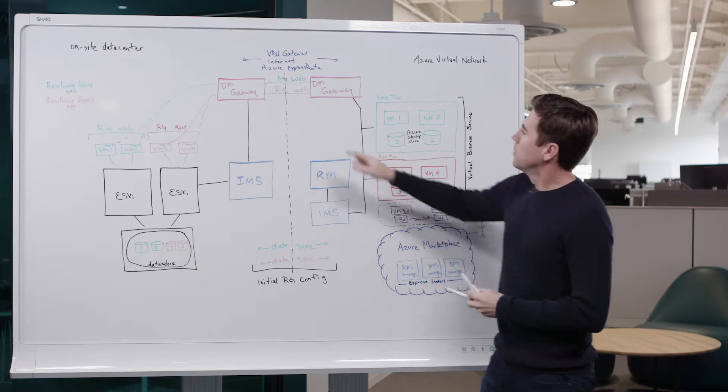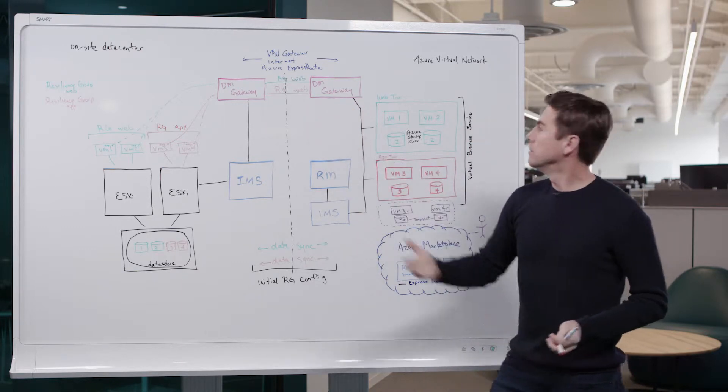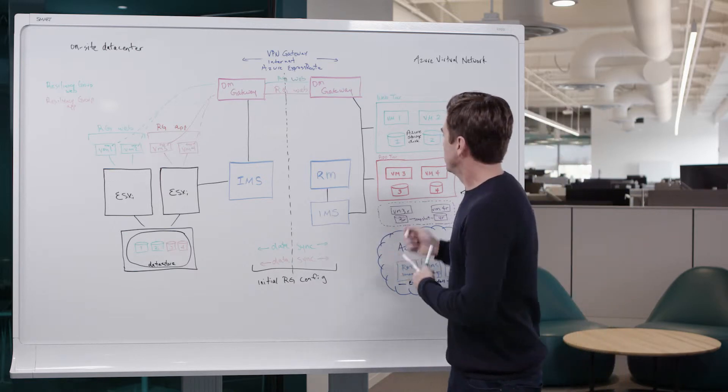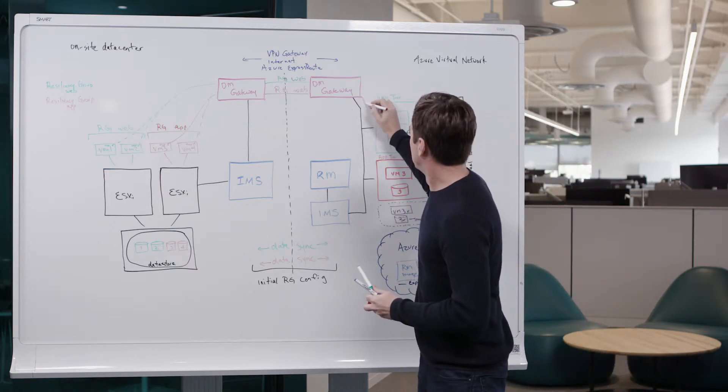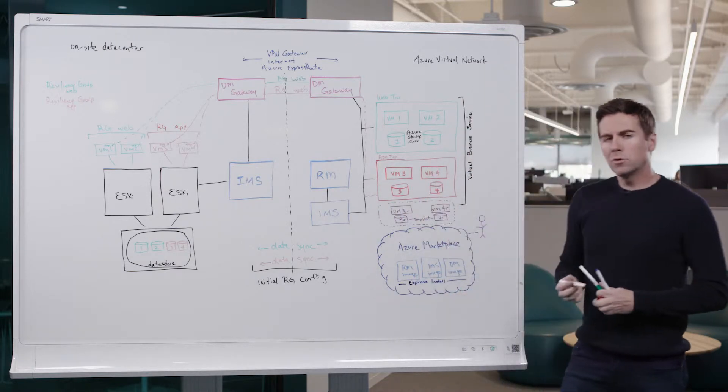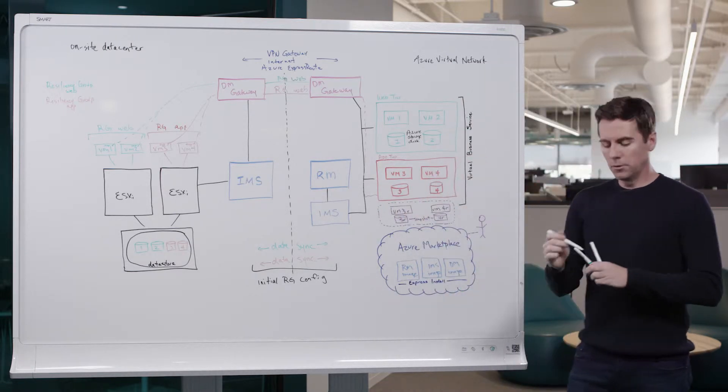So over here, once the data is replicated into our gateway appliance on the Azure virtual network, that data is actually applied down to Azure storage disks, which are already provisioned within the virtual network.